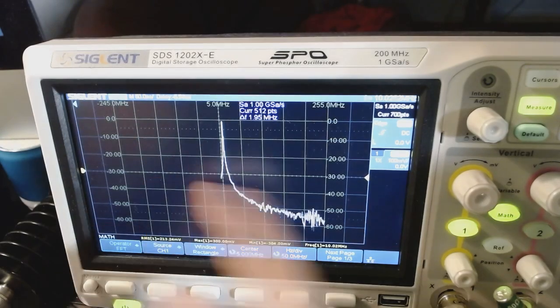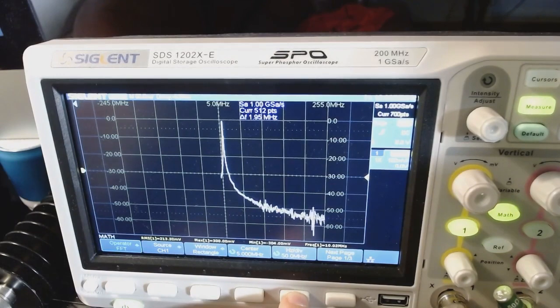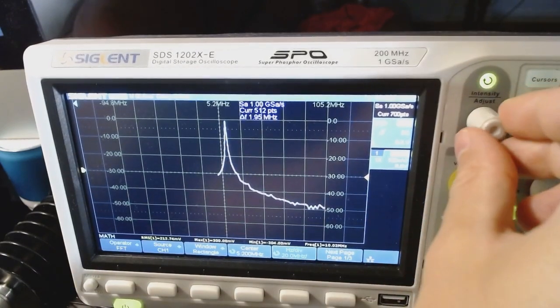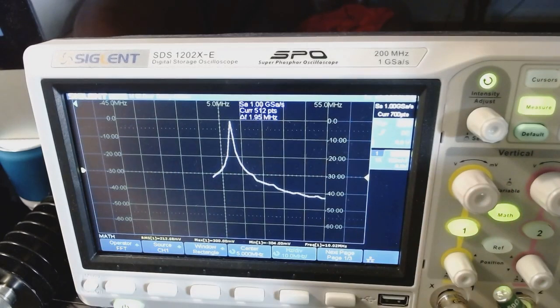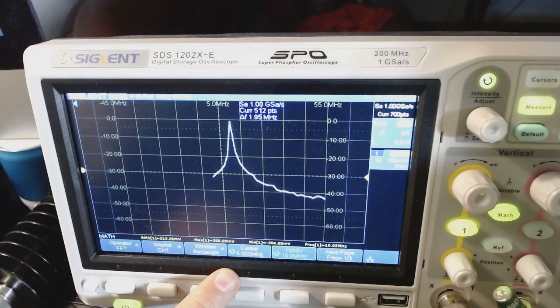I can increase the resolution. So instead of having 50 megahertz per division, let's go down significantly, let's say, to 10 megahertz. And right, so you have now 10 megahertz per division.